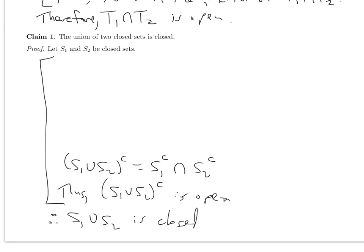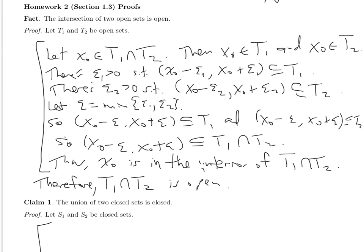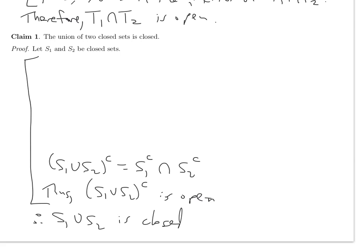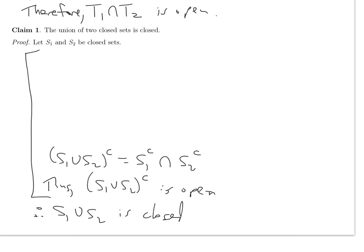So here I have the intersection of two open sets. The reason I'm appealing to the earlier proof is that that fact shows the intersection of open sets is open. And so I can see how the proof goes together: this intersection is open by the fact proved above. So all I've got to do is put my argument together to point out why these two components are open.